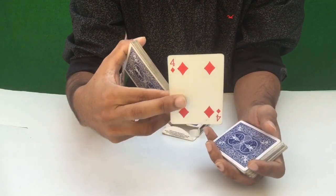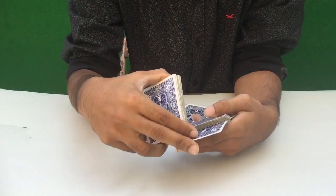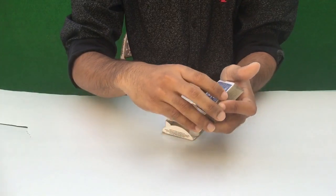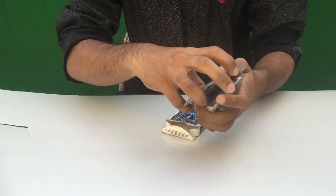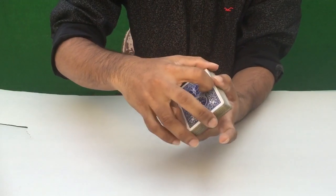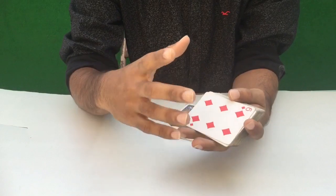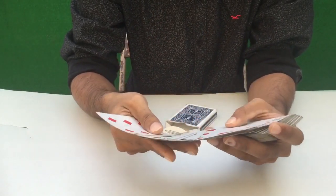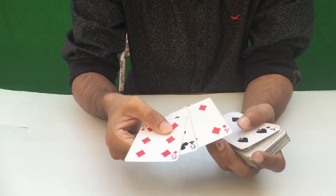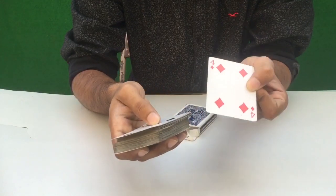This card is already the 4 of diamonds. This is the first deck. Now you can use it for 4 of diamonds. This is the 4 of diamonds. Now, I will show this 4 of diamonds.